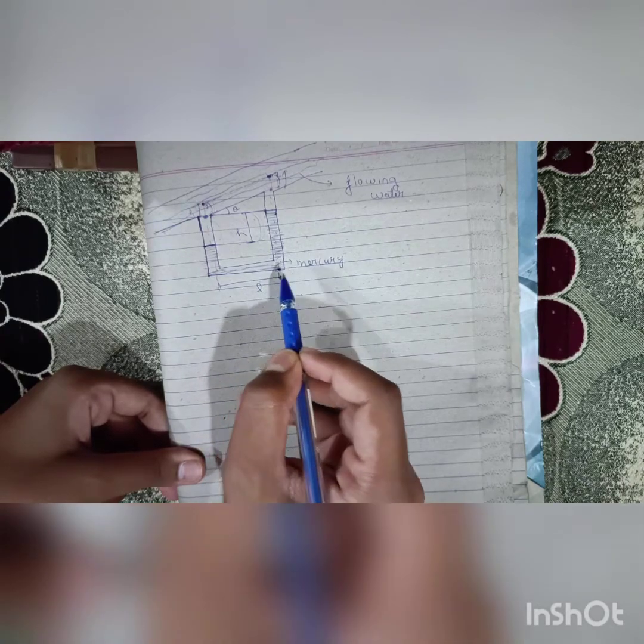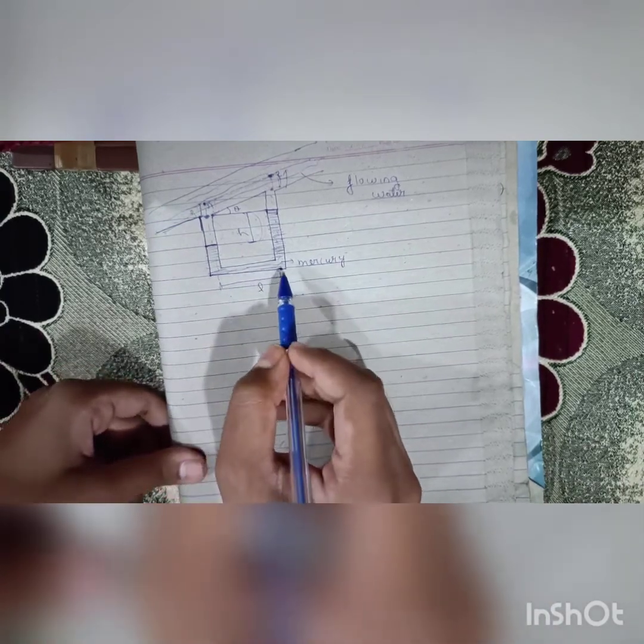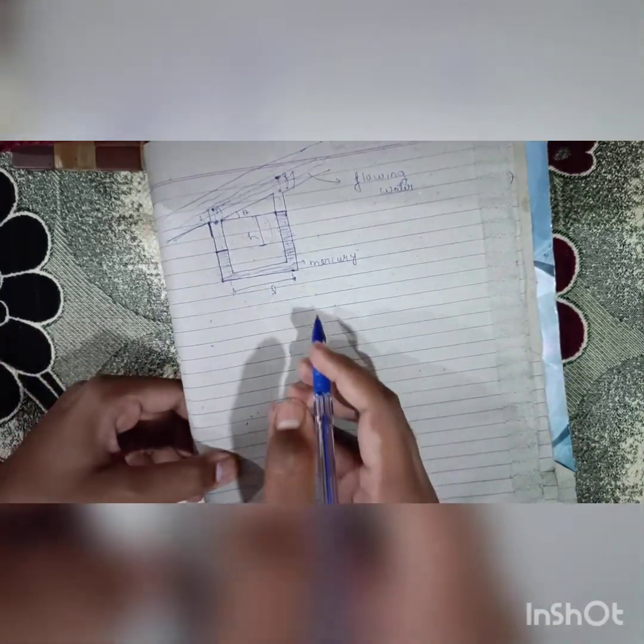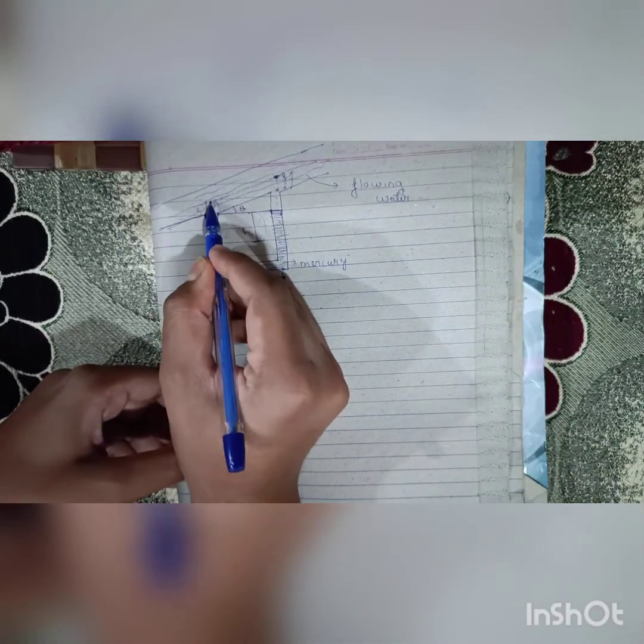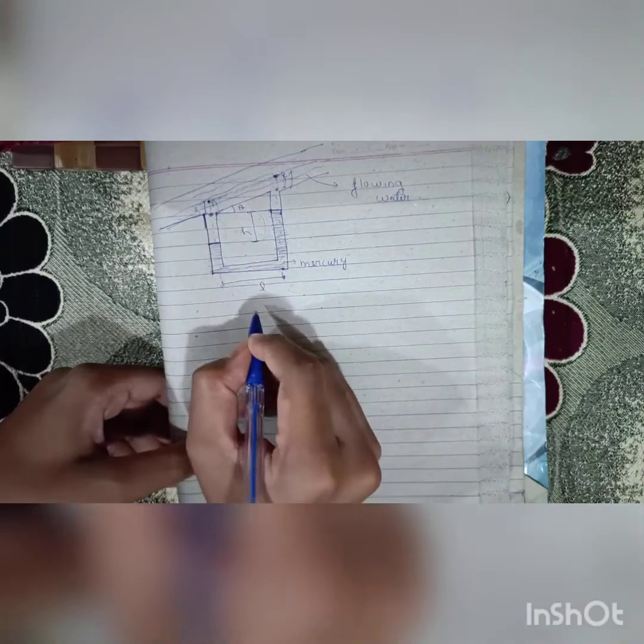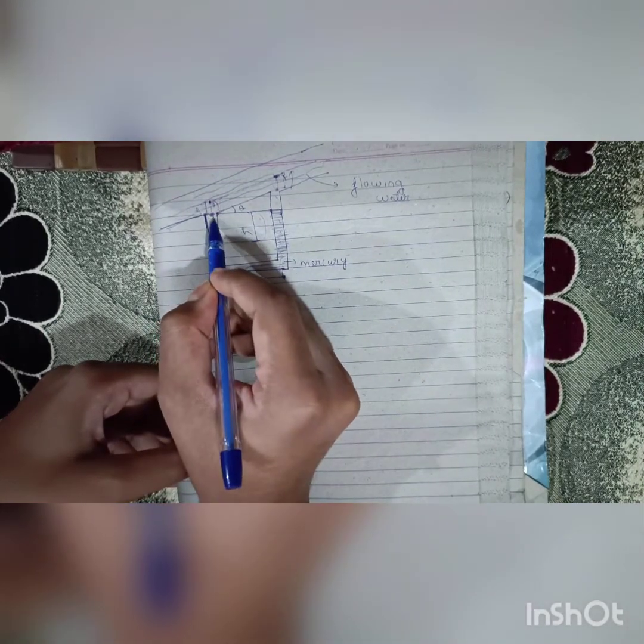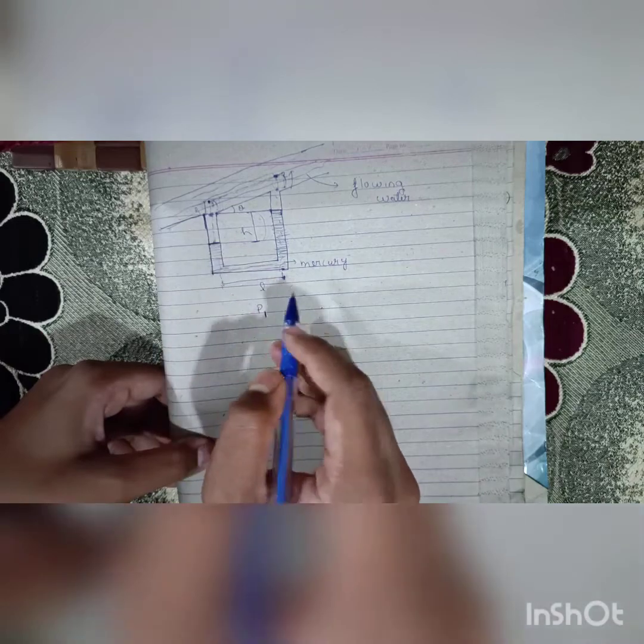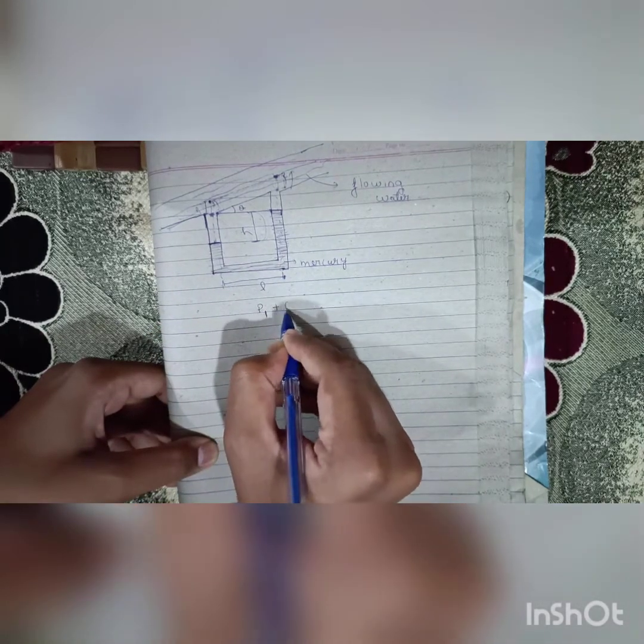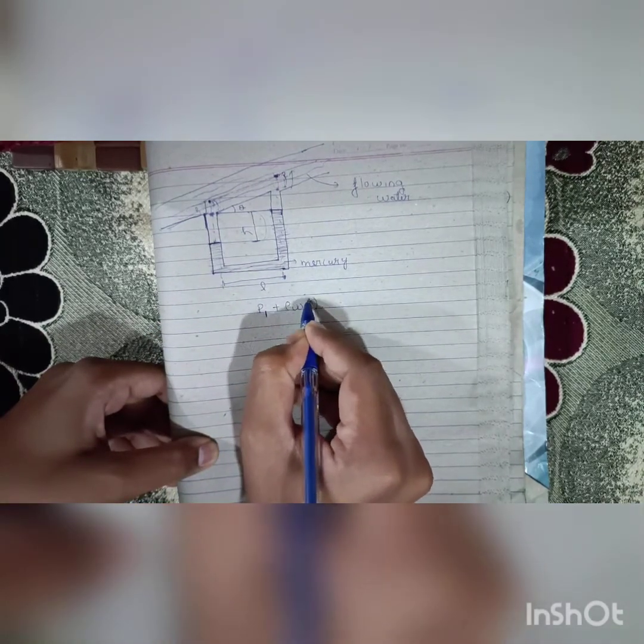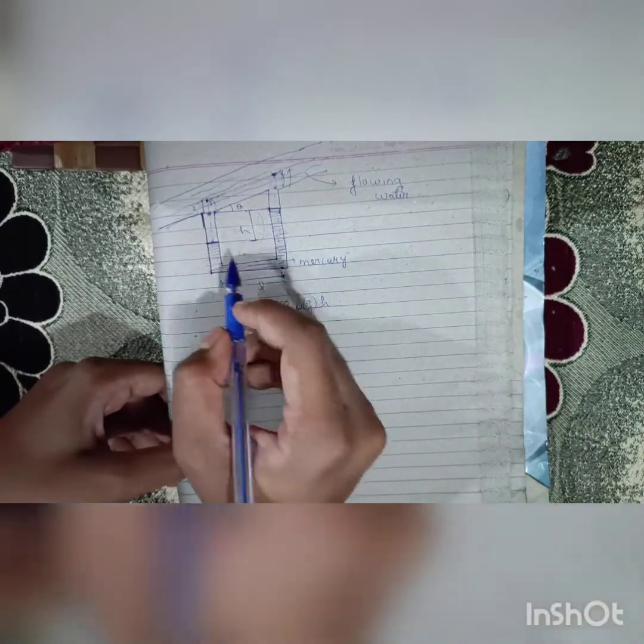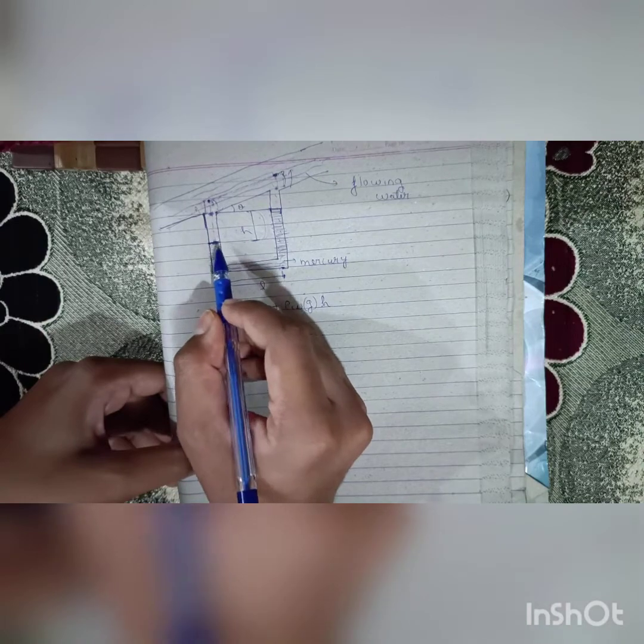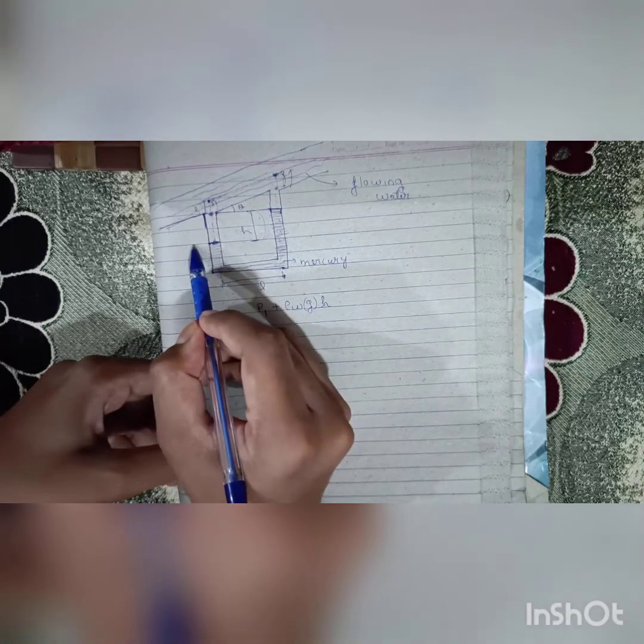Suppose this length is given to us as l. Let's start with the problem. Suppose pressure here is p1 at this point. Now we will be traveling in water till here in the direction of gravity, rho water g, at a depth of h.